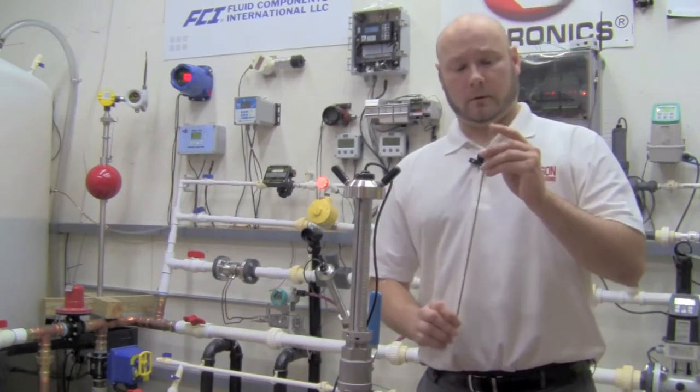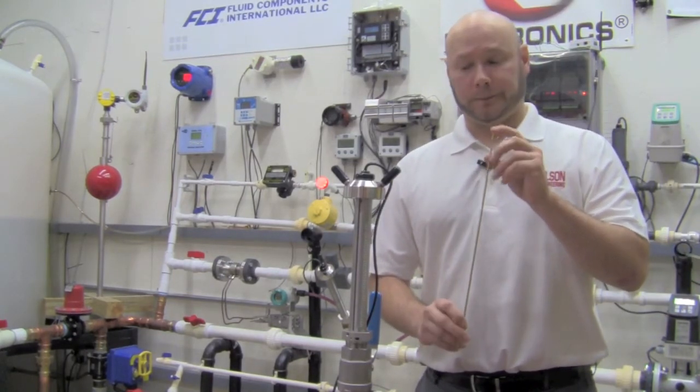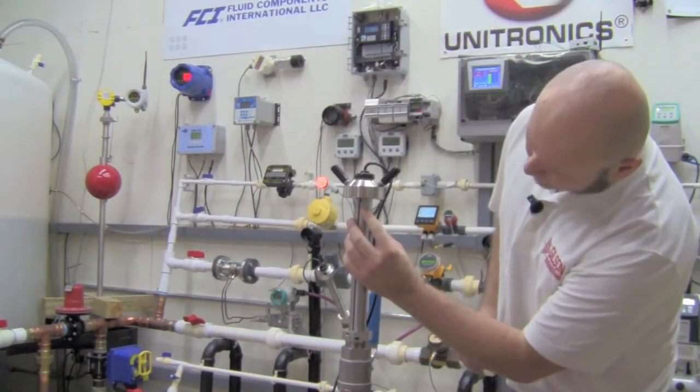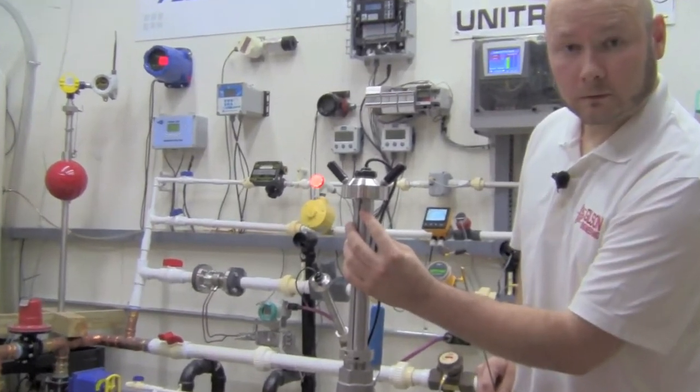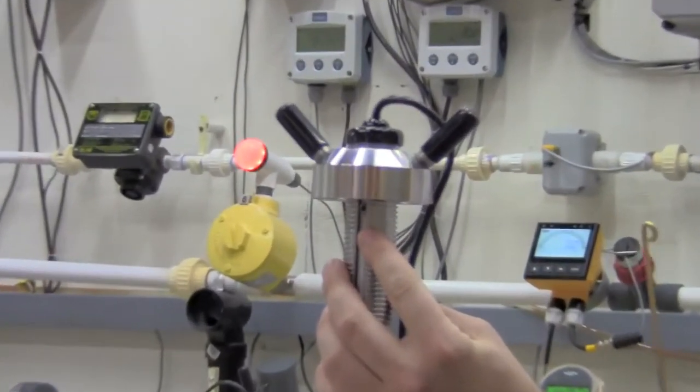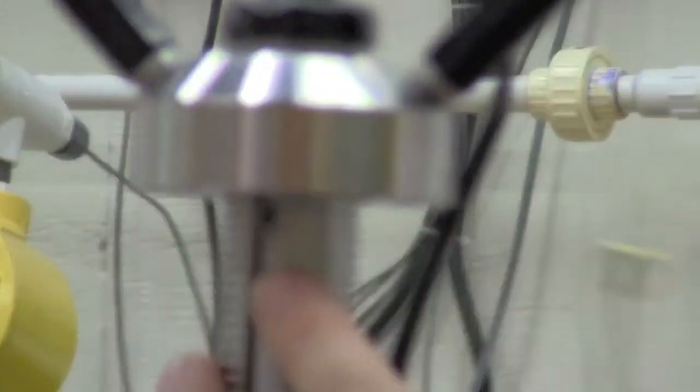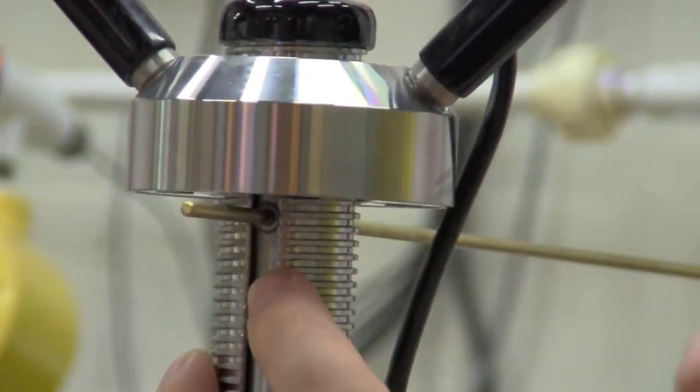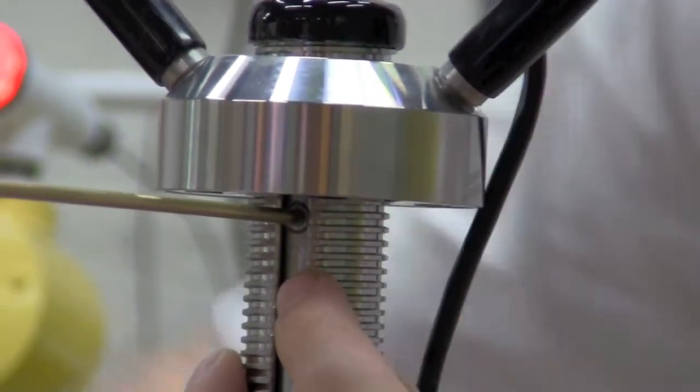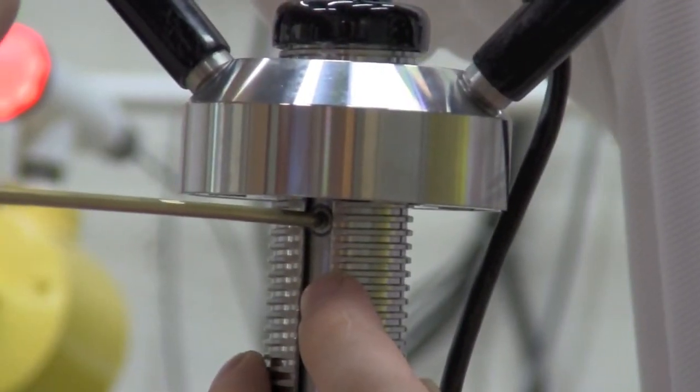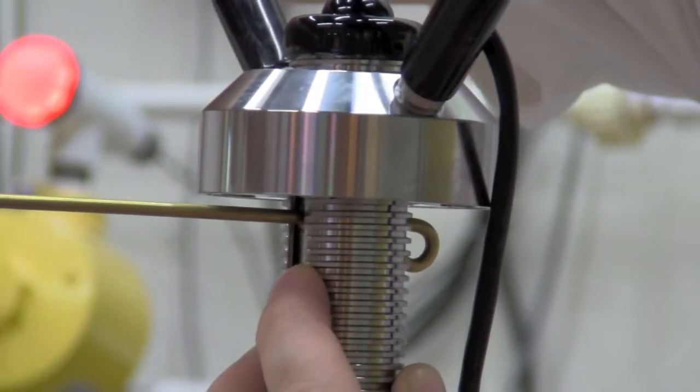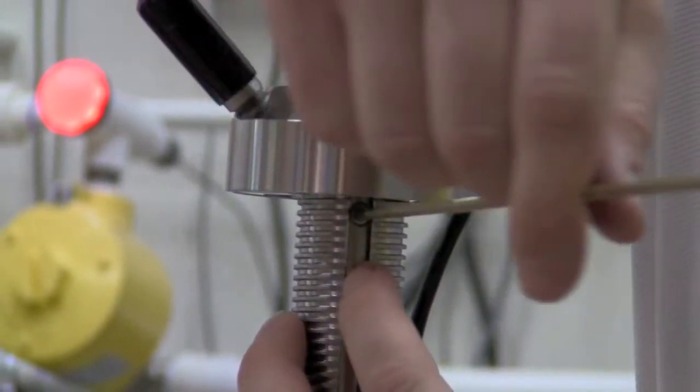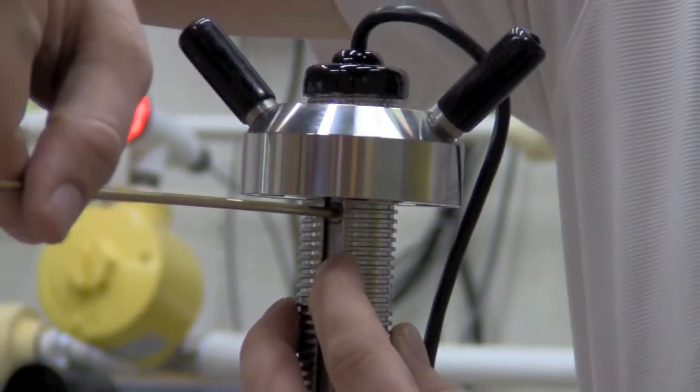At this point, we're going to grab our alignment rod. We're going to locate the alignment hole just underneath of the adjustment ring. We're going to take the alignment rod and insert it through the alignment hole. You can see at this point, I can freely begin to turn the unit.